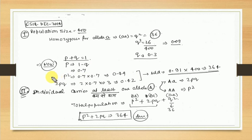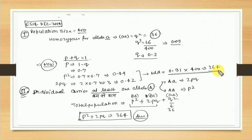Adding p² and 2pq gives the proportion of the population that will have at least one capital A allele. Multiplying by 400, the answer is 364. So that was the first method. We will now see the second method.